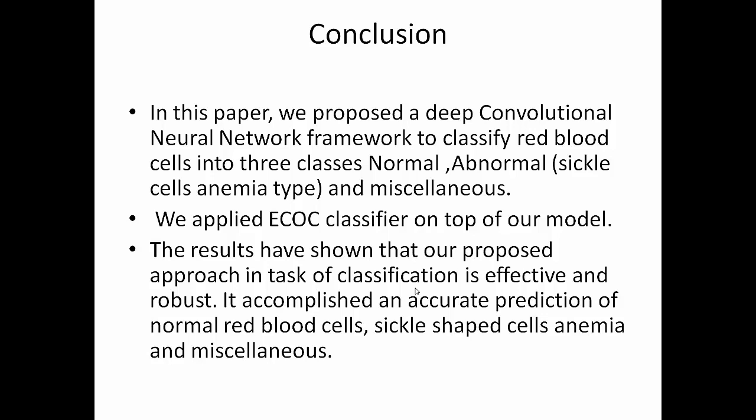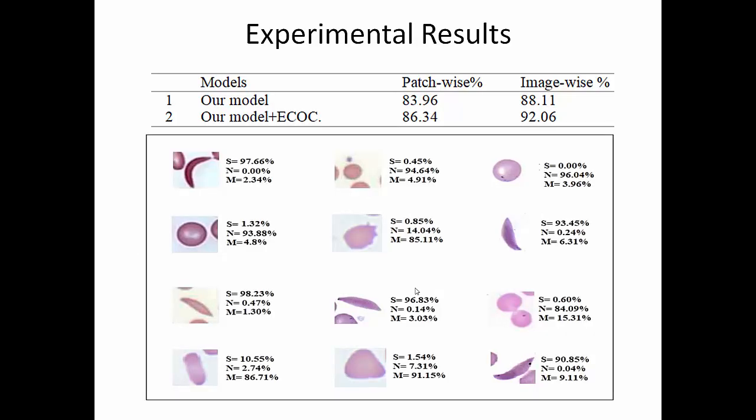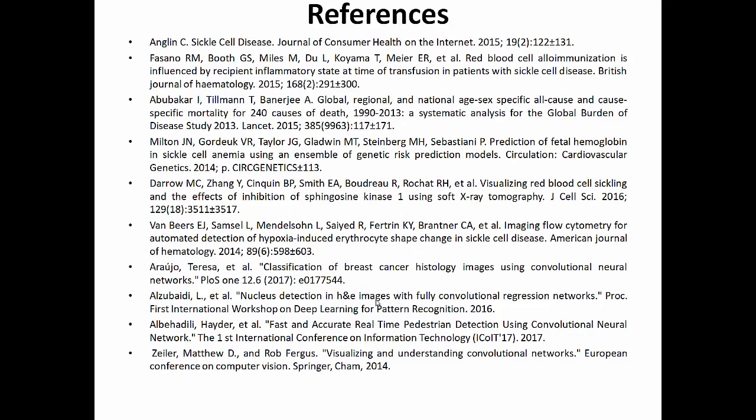It's also worth mentioning: after we classify, we have the ability to count the number of normal and sickle shapes. Usually the most important thing is to count the number of sickle cells to evaluate the level of danger. After we classify these images, we can calculate how many patches or how many sickle cells anemia and give an accurate number instead of using image processing techniques.